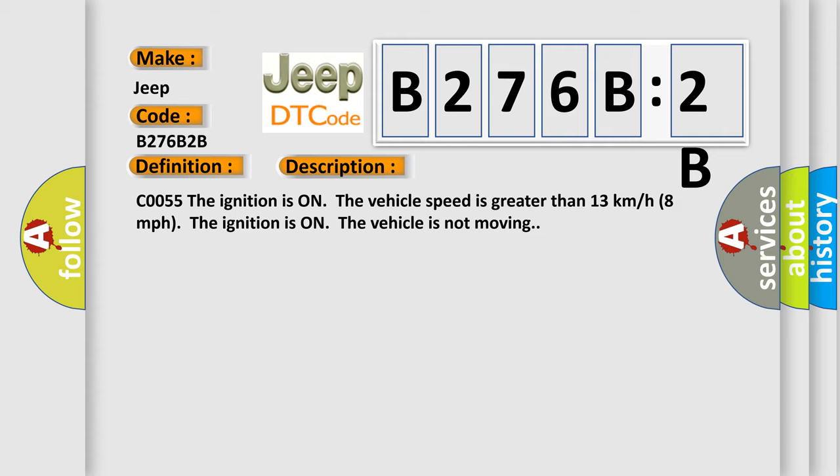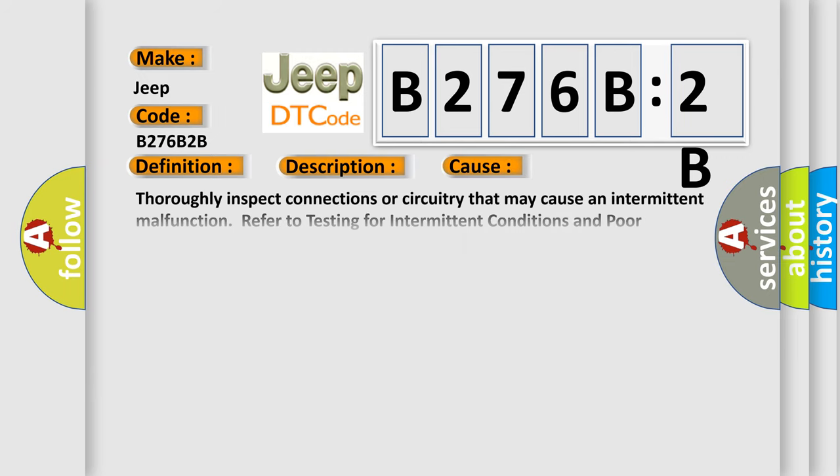CO055 If the ignition is on the vehicle speed is greater than 13 kilometers per hour, 8 miles per hour, the ignition is on the vehicle is not moving. This diagnostic error occurs most often in these cases.